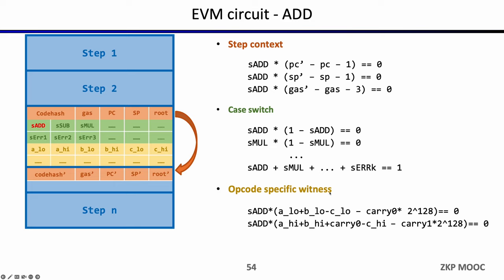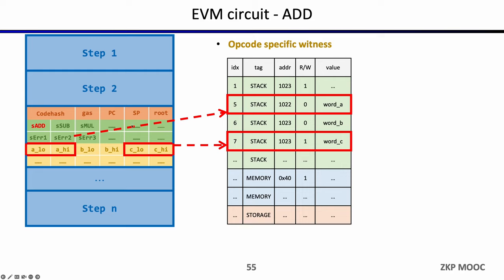For opcode-specific witness, using ADD as an example: you time it with S_add because it only works if this area is selected to be ADD. If it's ADD, then a plus b minus c equals zero, and there is some carry. This is ADD-specific logic. But there is still one missing piece — for ADD, you pop two elements from your stack, a and b, and push c back. You haven't yet proved that a and b are what you previously pushed to the stack. You need to prove that a and b are consistent with what you pushed previously — basically proving that reads and writes are consistent.